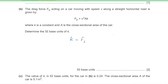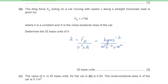Force equals kg·m·s⁻², speed squared equals m²·s⁻², and area equals m². So this becomes kg·m·s⁻² divided by m⁴·s⁻², and the SI base units for the constant K are kg·m⁻³.